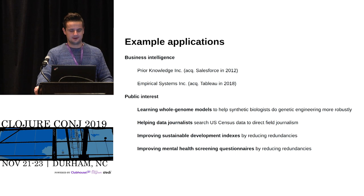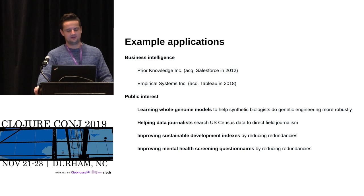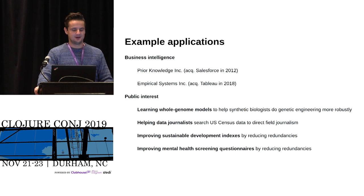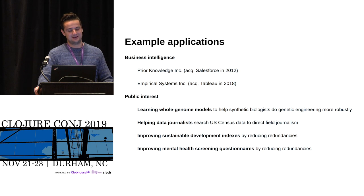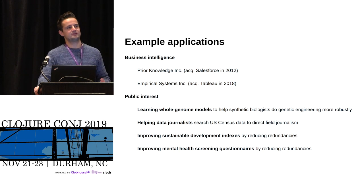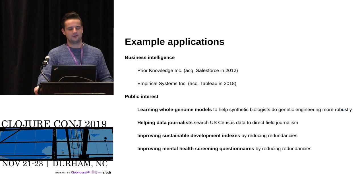We also help data journalists — we work with the New York Times to process census data to direct field journalism, and journalists probably won't learn Clojure. We work with the United Nations Sustainable Development Index to reduce redundancies and detect dependencies to understand which countries are actually doing well. We also work on a project in psychology to improve mental health screening questionnaires by reducing redundancies. Following state of the art, diagnosing a mental health issue might require 10 to 20 questionnaires with 50 questions each — asking a child 1,000 questions is impossible. By understanding which random choices in synthesized programs are dependent and predictive of each other, we can eliminate redundant questions.